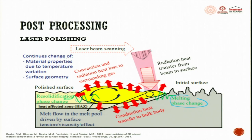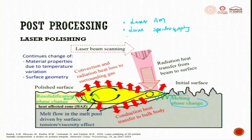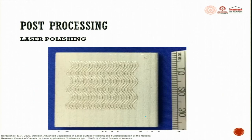Continuously changing material properties due to temperature variation make laser polishing a very promising technique. The same laser used for additive manufacturing is also used for spectroscopy, reverse engineering, and polishing - all done by the same laser just by tweaking the power and interaction time, all in one machine today.